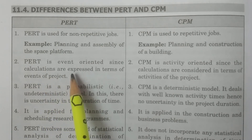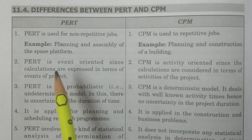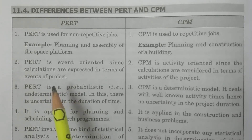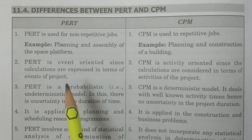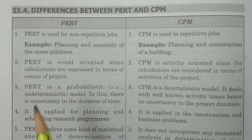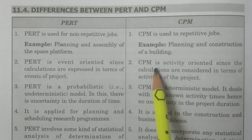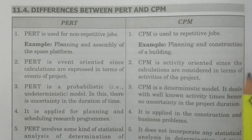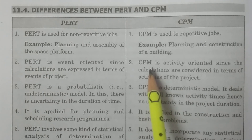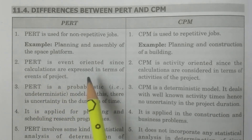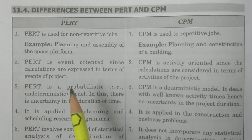Coming to the second point: PERT is event-oriented, since calculations are expressed in terms of events. Events are nodes — if you join two events, you will get an activity. Activity is formed by joining two particular events. CPM is activity-oriented, since calculations are considered in terms of the activities of the project. Critical path method is activity-oriented programming, and PERT is event-oriented programming.